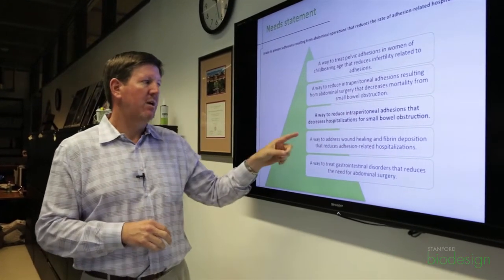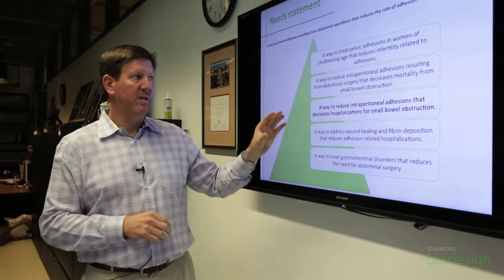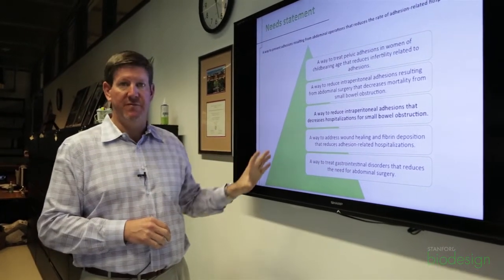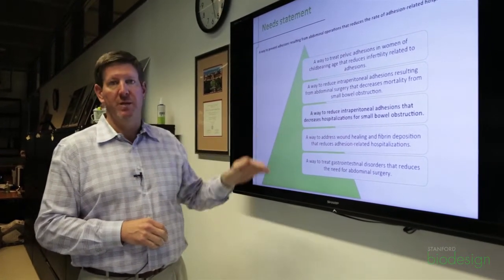One of the challenges with scoping is we try and push the limits of both being very specific and then less specific by what we call scoping up and scoping down.